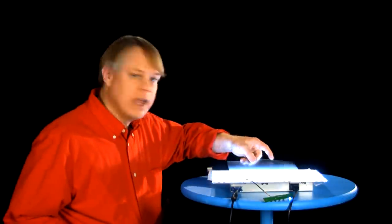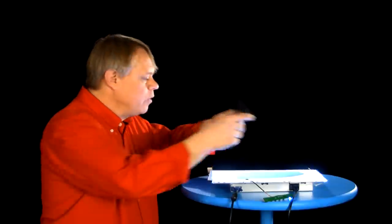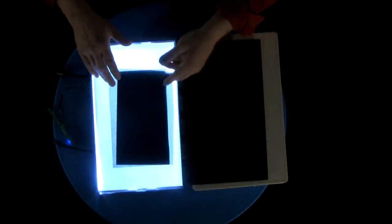If I lay this sheet on the optical system, you can see that it passes light. And if I put this piece on top, it also allows light to pass. But if I rotate it exactly 90 degrees to the bottom sheet, you'll see the light disappears.